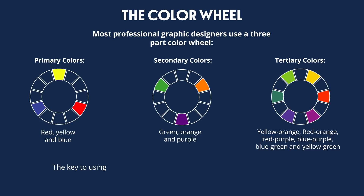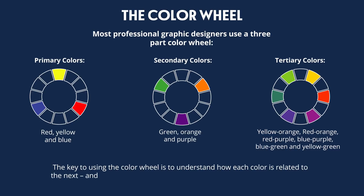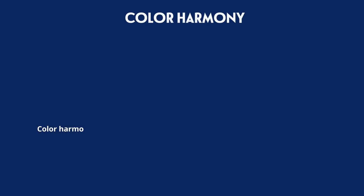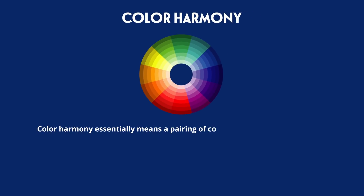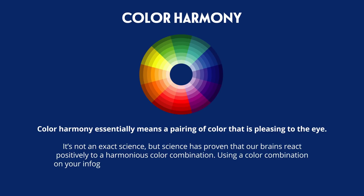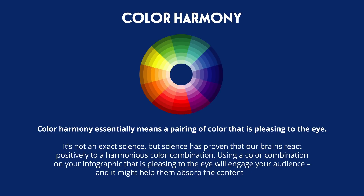The key to using the color wheel is to understand how each color is related to the next and to make sure that they are actually going to look good together. That's where color harmony comes into play. Color harmony essentially means a pairing of colors that is pleasing to the eye. It's not an exact science, but science has proven that our brains react positively to a harmonious color combination. Using a color combination on your infographic that is pleasing to the eye will engage your audience, and it might help them absorb the content better.